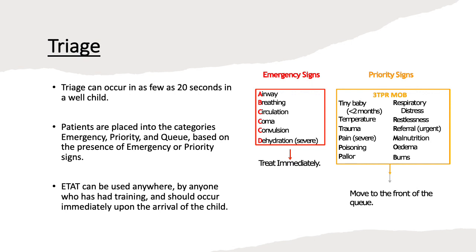Priority signs include tiny baby, temperature, trauma, pain, poisoning, pallor, respiratory distress, restlessness, urgent referral, malnutrition, edema, or burns — the acronym 3TPRMOB can help you remember that. Children with any of these signs should move to the front of the queue. If a child has neither emergency nor priority signs, they go to the back of the queue and wait to be seen.